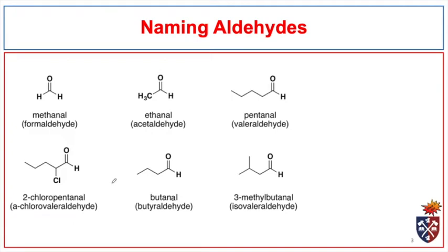Let's talk about naming of aldehydes. Aldehydes take their name from the parent alkane chains. The E is removed from the end and replaced with AL. So in the case of a one-carbon chain, which would be methane, we call it methanal. Two-carbon chain: ethanal. Five-carbon: pentanal, and so on. The carbonyl carbon in the case of aldehydes is always in the one position, and we number everything relative to that.